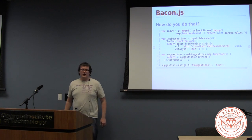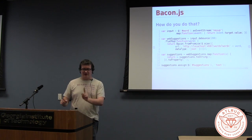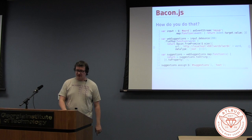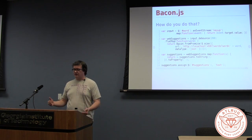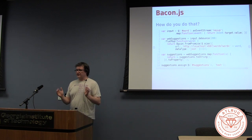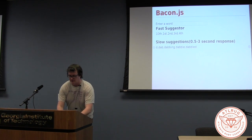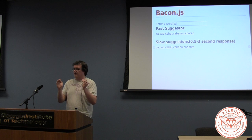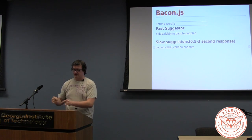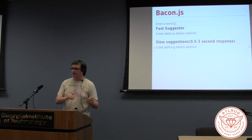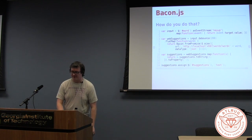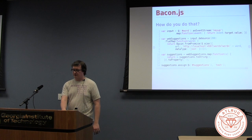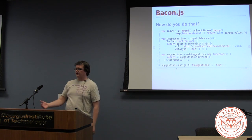So webSuggestions is now just an event stream that will have arrays in it — like CA, cab, cabal, cabana, cabaret. And then when I change it to D, it'll push another thing through that says D, dab, dabbing, dabble, et cetera. We take those and map them out to extract the string from the JSON response, turn it into a property again, and assign it to a div there. Realistically you'd want to do something more clever and style it up and make it selectable, but the dab is there — the rest is for a front-end guy.